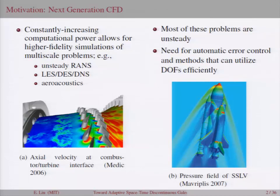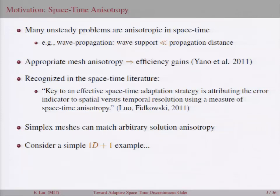There's a number of fascinating applications out there, but current methods really lack the ability to run automatic error control and they generally don't use their degrees of freedom very efficiently. The reason I believe that working in space-time, which is substantially more complicated and expensive than traditional methods, has the potential to be more effective is because a lot of unsteady problems are actually really anisotropic in the space-time direction.